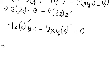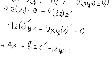Now we need to simplify. We have 4x, negative 8z times the partial derivative of z with respect to x which equals 1, and the partial derivative term here as well.